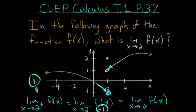And since both of these limits are not equal to the same value, we can conclude that this limit as x approaches 2 of f(x), this limit does not exist.